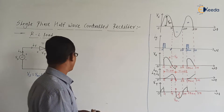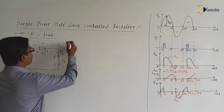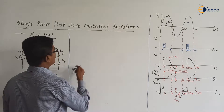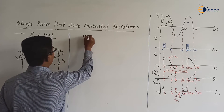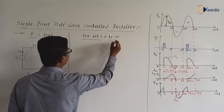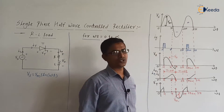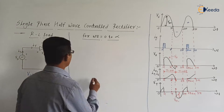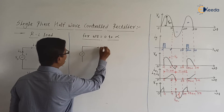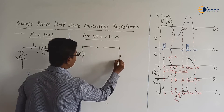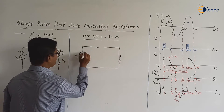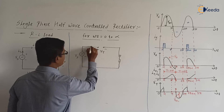Now let us discuss one by one the circuit operation during different intervals. For ωt = 0 to α, Vs is positive. Vs positive means thyristor will be in the forward bias mode, but we have not applied the gate signal. So our thyristor will be in the forward blocking mode. This is Vs with plus and minus; thyristor is in the off state.